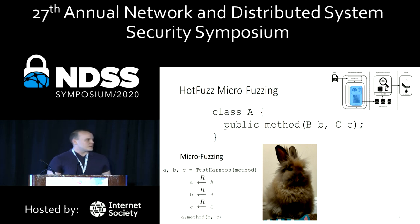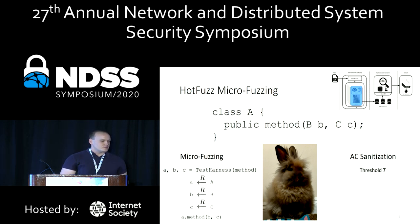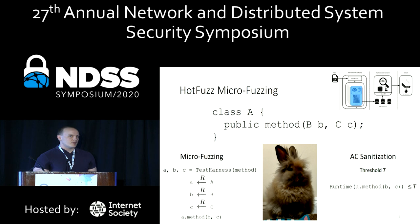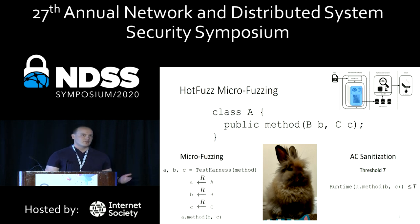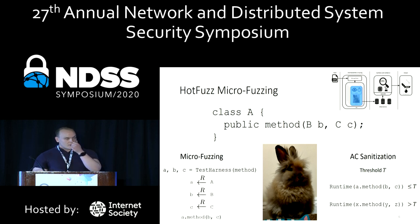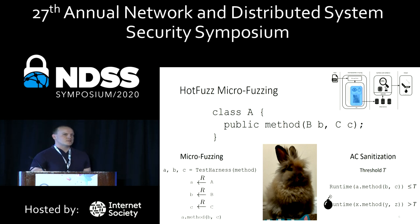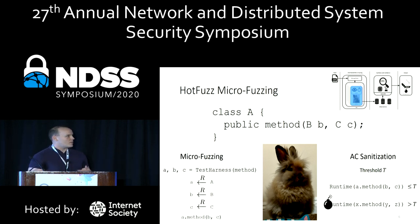Once we can execute a given method, we need to sanitize its execution for algorithmic complexity vulnerabilities. HotFuzz implements sanitization using two approaches. First, we use a configured threshold T and use the fine-grained measurements available in the IVM to inspect the runtime for every execution of a given method. If execution exceeds threshold T, we sanitize the execution, kill the process, and submit the test case as evidence of a potential AC bug. We use the timer API available on UNIX systems: at the beginning of every method invocation, we start a timer for 10 seconds, and if the method fails to clear the timer, the OS kills the process and we submit a test case for the synthesis and validation stage.